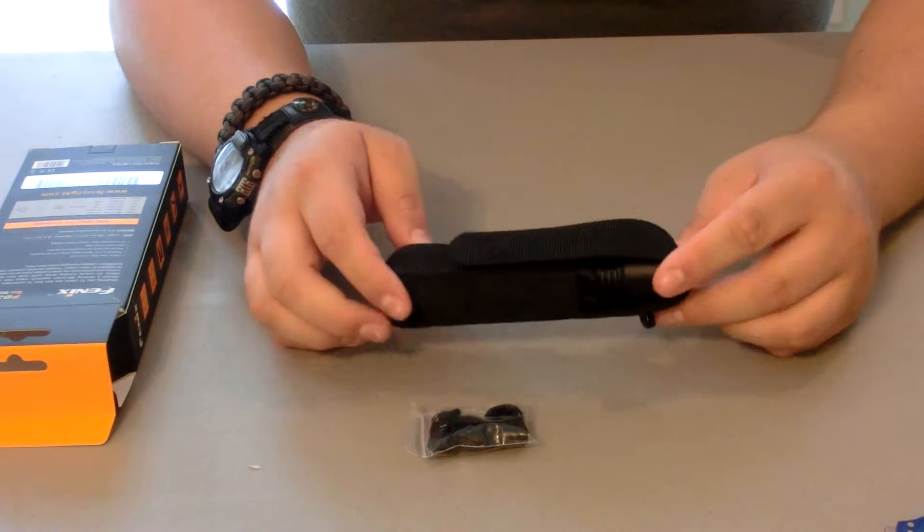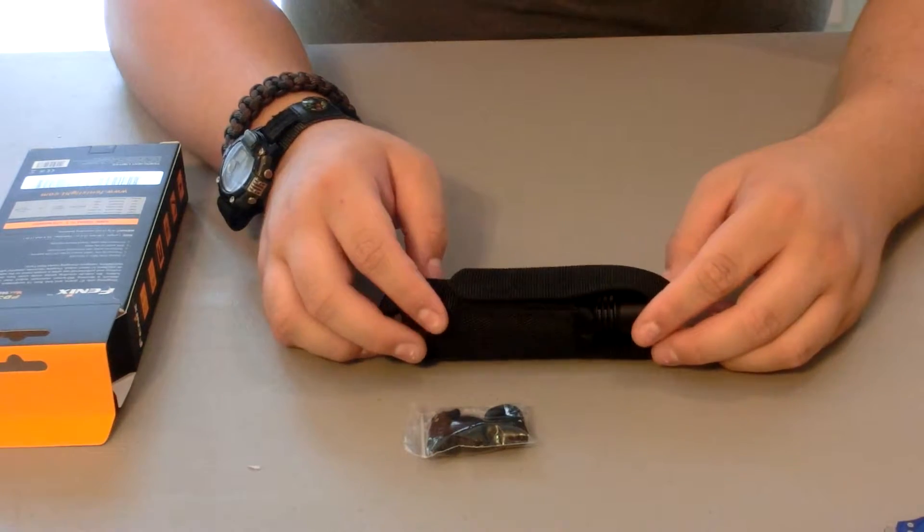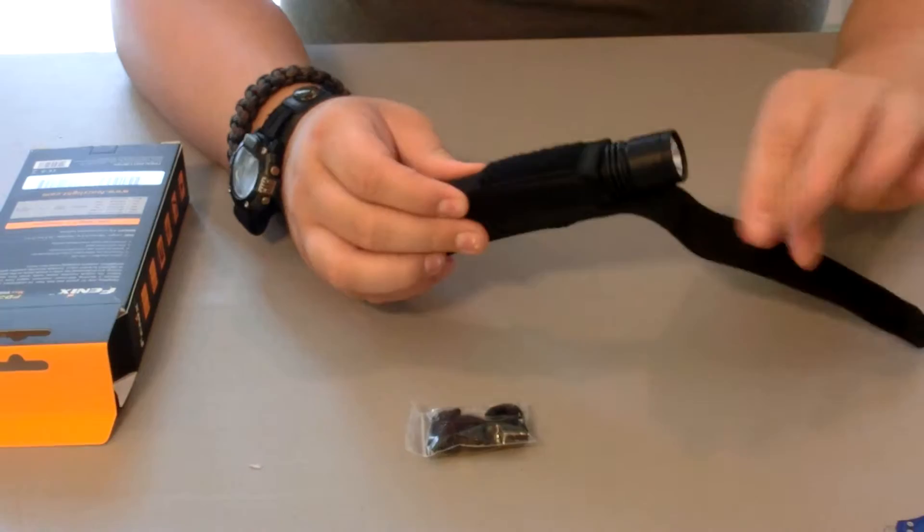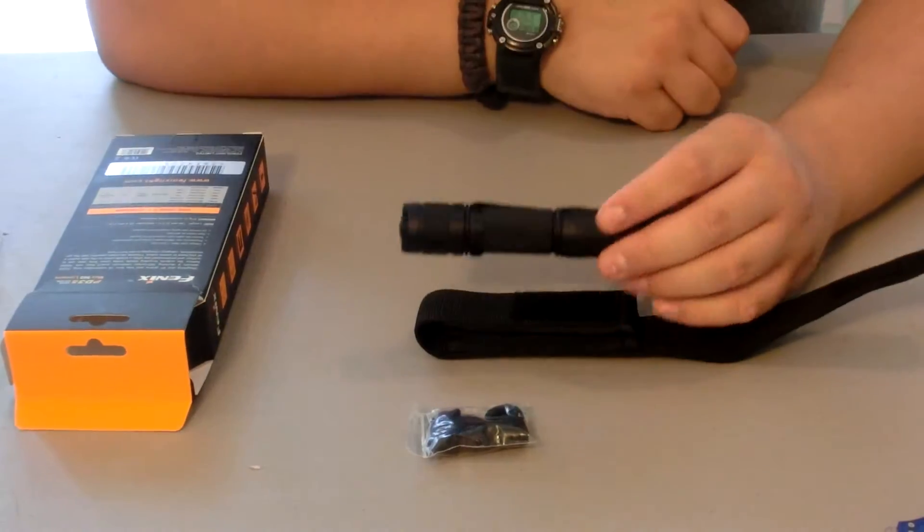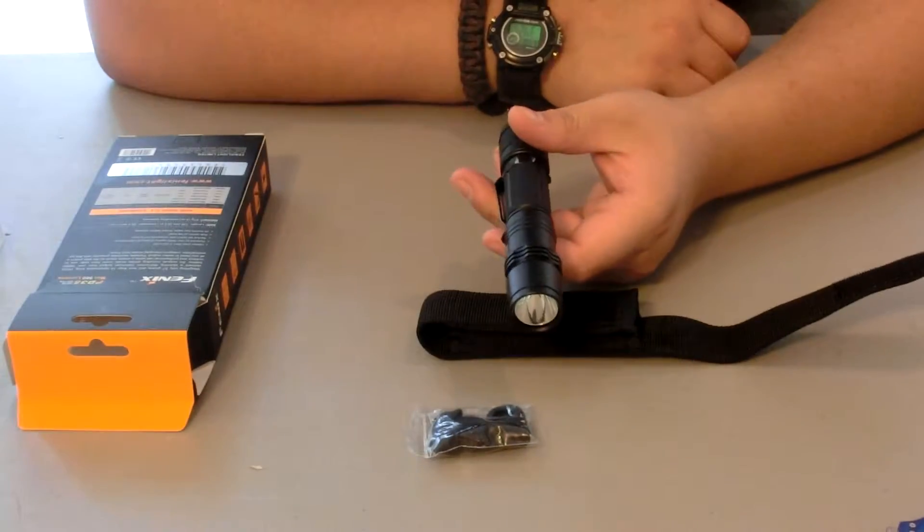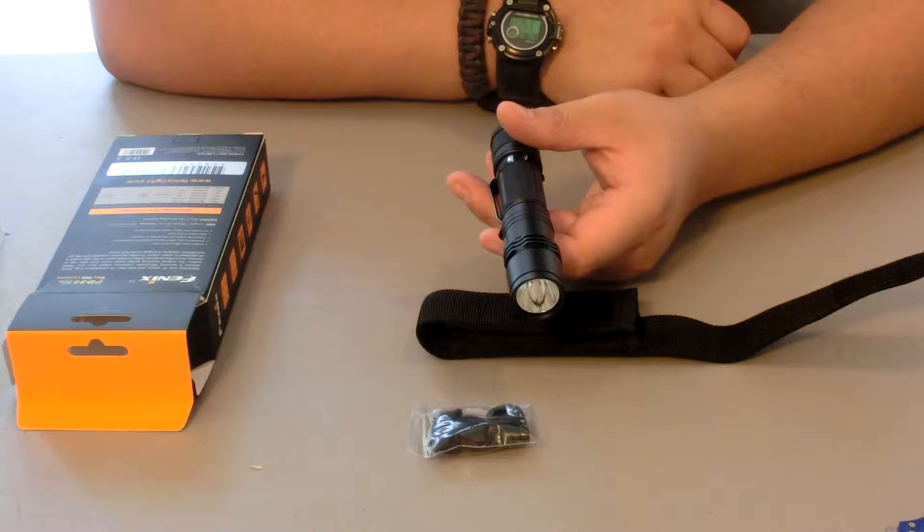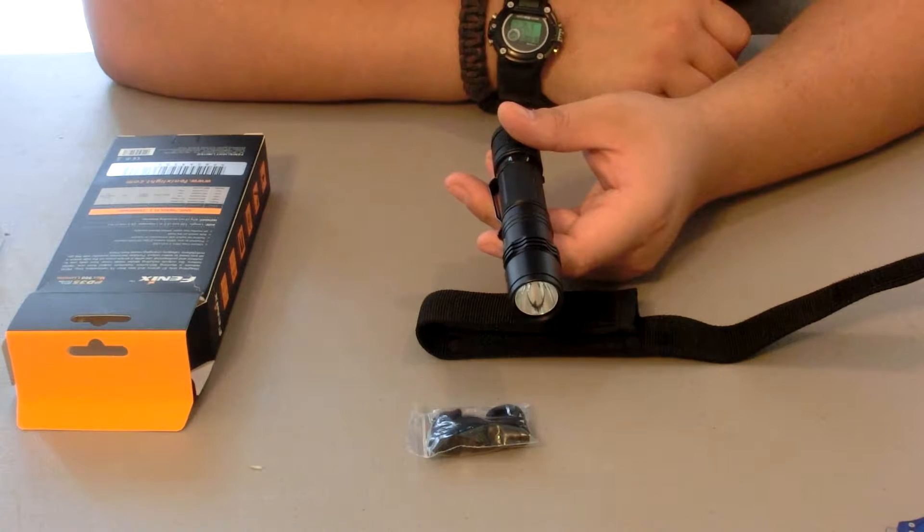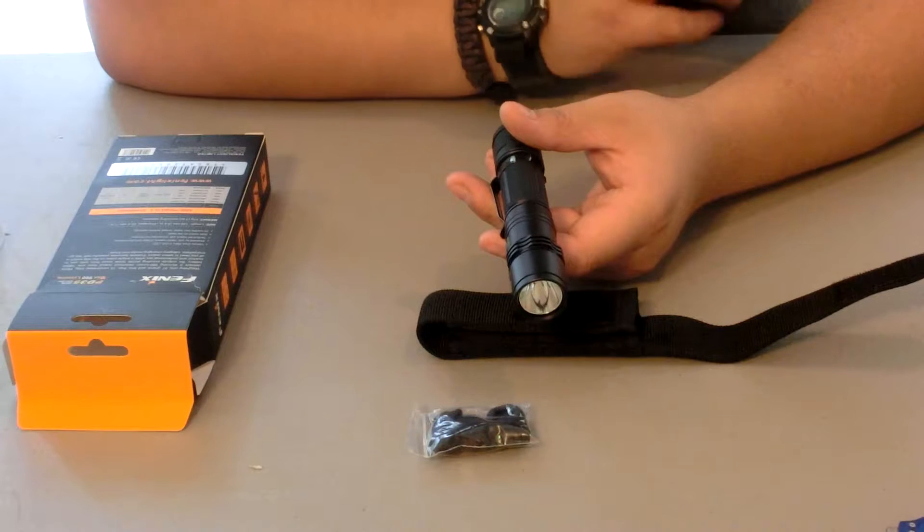Let's talk about its modes. Turbo mode output is 960 lumens and its runtime is 1 hour and 10 minutes. The distance is 208 meters.